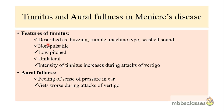The tinnitus in Meniere's disease is described as a buzzing, rumble, machine, or sea-shell sound. It is non-pulsatile, lower pitched, affects only one side, and one important feature is that the intensity of tinnitus increases during attacks of vertigo. Another feature is aural fullness — the patient describes a feeling of fullness or pressure in the ear that gets worse during attacks of vertigo. So these associated symptoms — hearing loss, tinnitus, and aural fullness — all become worse during attacks of vertigo.